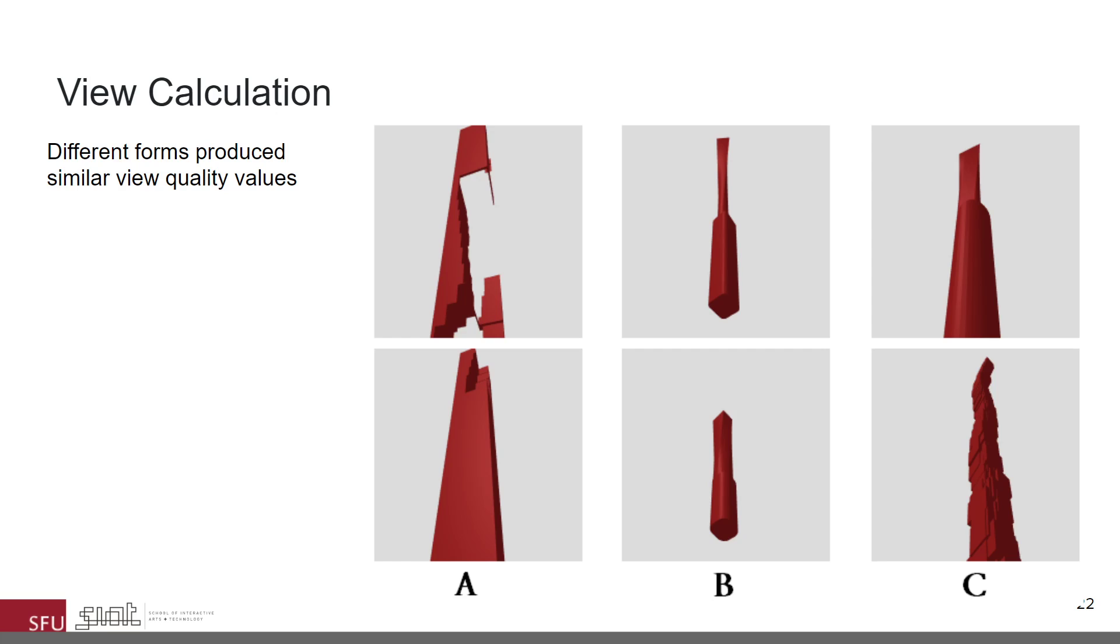Next, when comparing view qualities of design alternatives, we notice that models with different shapes produce similar view quality values. This led us to discover an issue in the method used to calculate the view quality value. For example, these two models have the same view quality value, although they are obviously different.